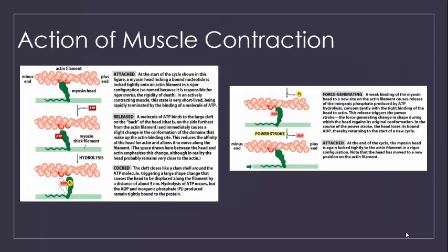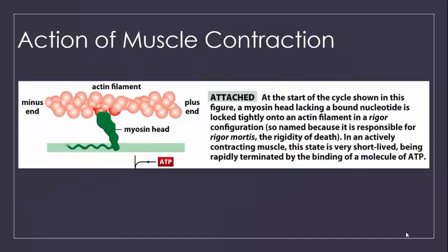What exactly causes this sliding motion to occur? There are five steps to this process, but in brief, the globular heads of the myosin filaments essentially push the actin filament towards the center of the sarcomere. Let's walk through each of these steps. To start the process, the myosin head — remember that there are 300 on each of the myosin filaments doing this — attaches to the actin filament in a tight association.